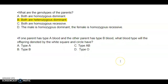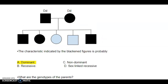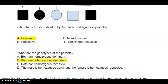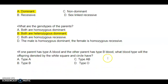The next question: if one parent has type A blood and the other has type B blood, what blood type will their offspring — denoted by the white square and circle — have? Since A is dominant and B is dominant, the unshaded offspring are showing the recessive trait. The only recessive blood type is O, so those offspring would have to be blood type O.